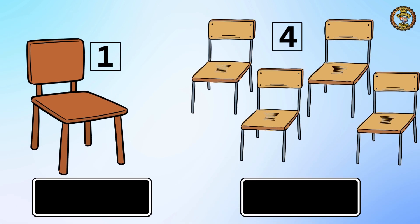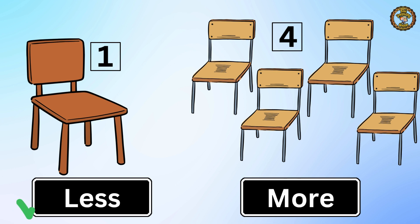Then we have one chair on the left and four chairs on the right. Which one is less? That's correct — one chair is less than four chairs.